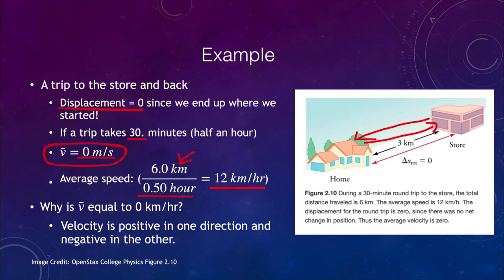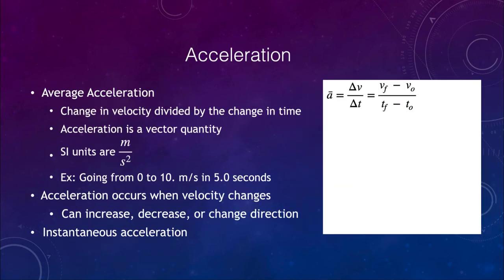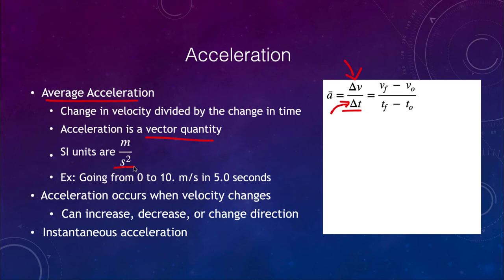Now let's look at acceleration. Average acceleration is a change in velocity, delta v, divided by a change in time, delta t. Like velocity and displacement, acceleration is a vector — it has a magnitude and a direction. Its units are meters per second squared, since it is a velocity in meters per second divided by a time, giving us meters per second squared.